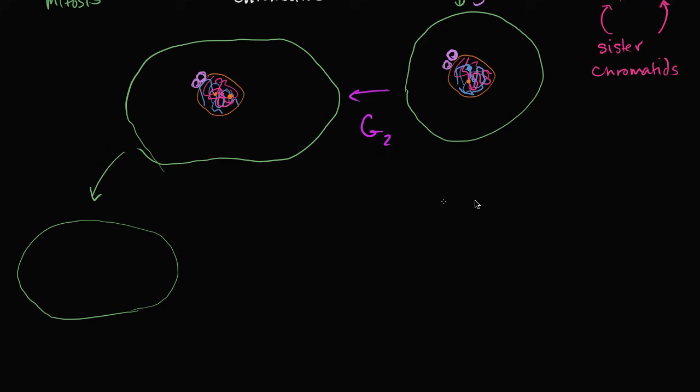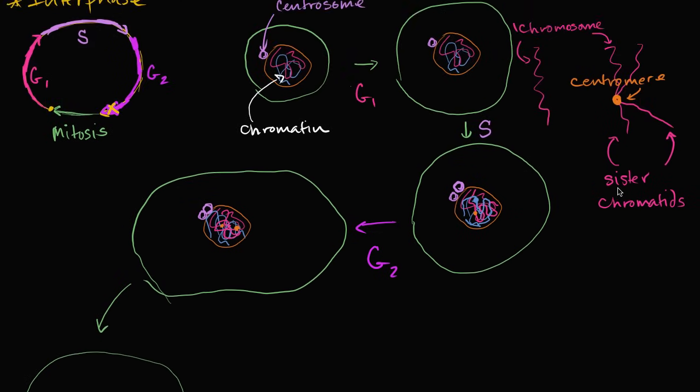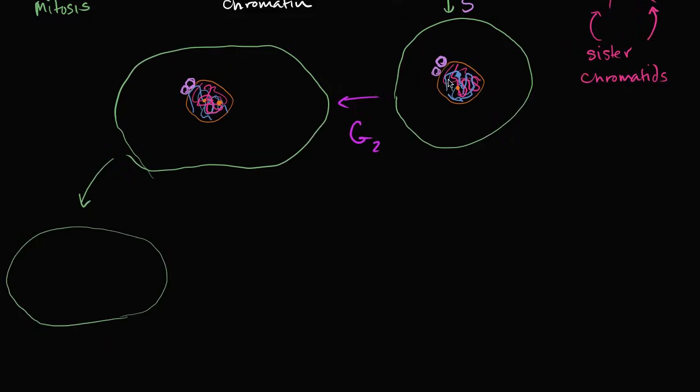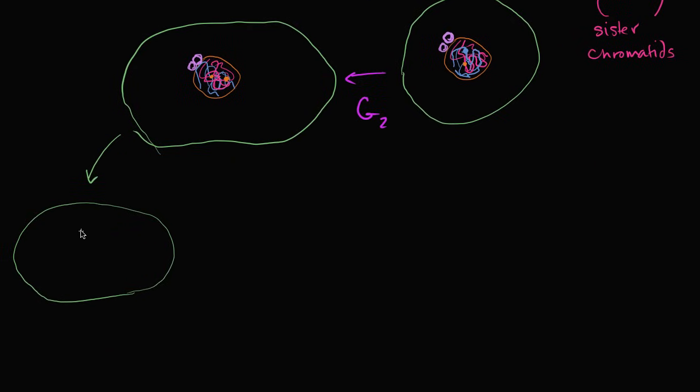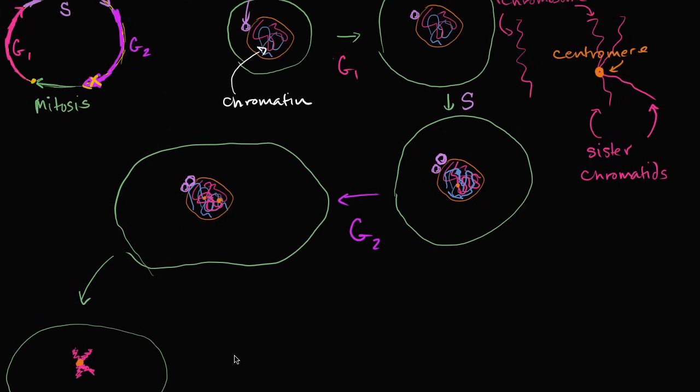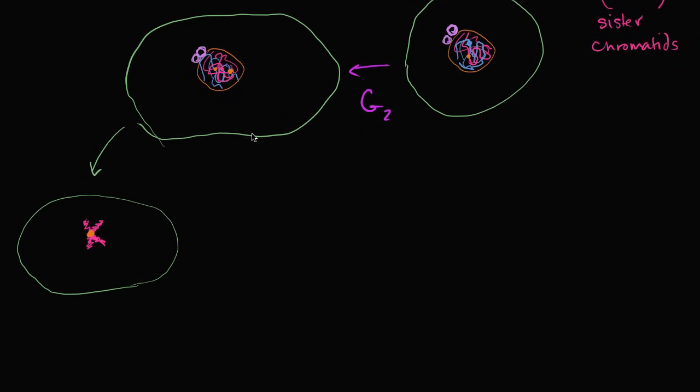So for example, that magenta chromosome which is now made up of two sister chromatids after replication, we talk about that in the interphase video. It might look something like this in a microscope. It's unlikely to be magenta, but it's going to have kind of that classic chromosome shape that you're used to seeing in textbooks. And it has the centromere that connects these two sister chromatids. Right now, both of these two sister chromatids combined are considered to be one chromosome.